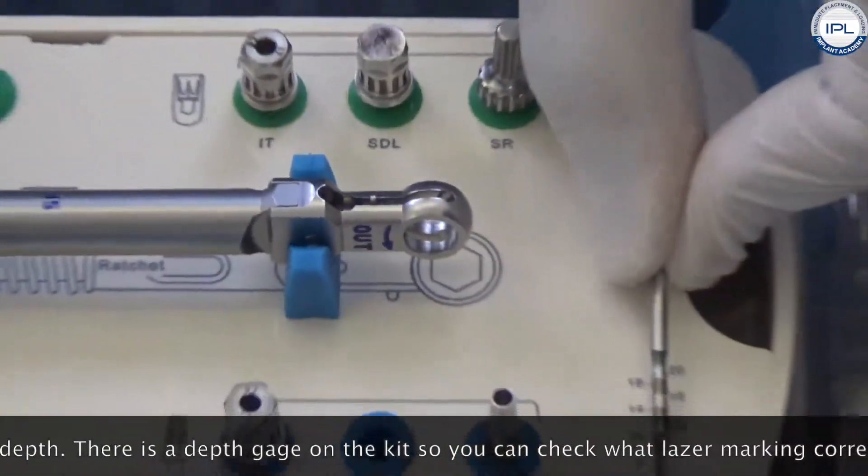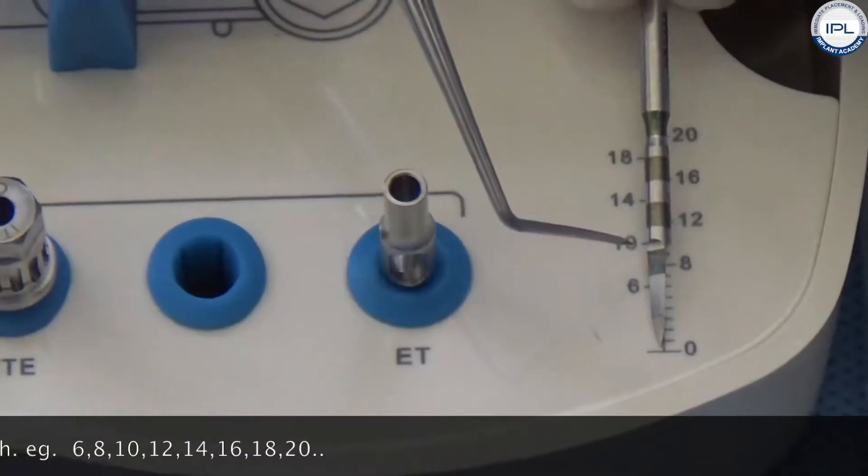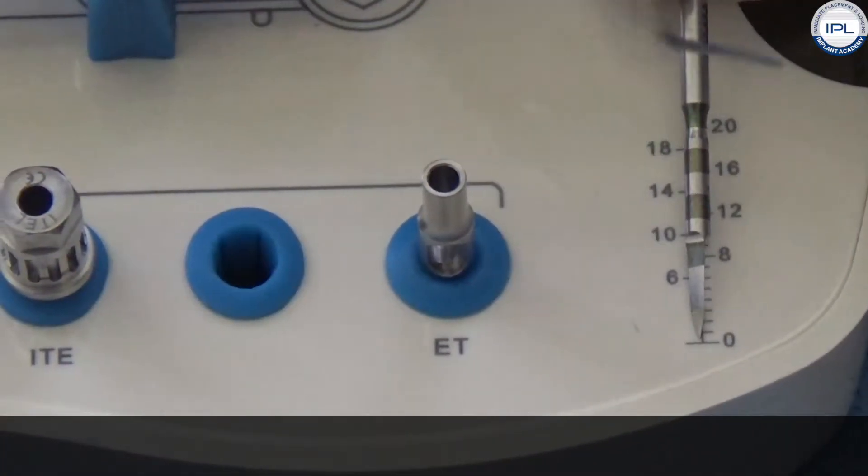There is a depth gauge on the kit so you can check what laser marking corresponds to which depth: 6, 8, 10, 12, 14, 16, 18, 20.